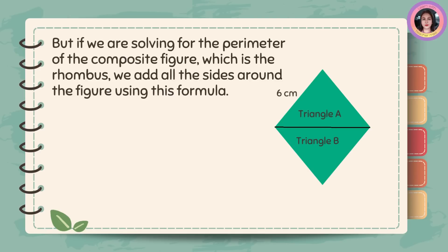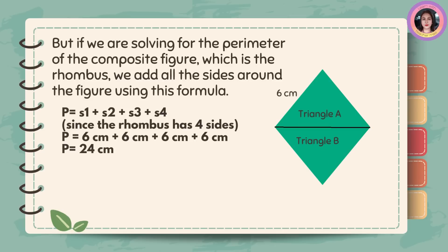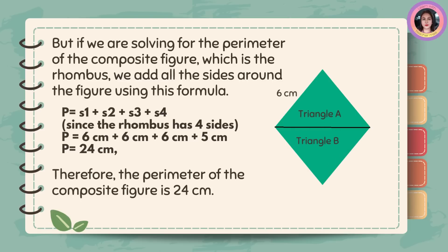But if we are solving for the perimeter of the composite figure, which is the rhombus, we add all the sides around the figure using this formula. Perimeter is equal to S1 + S2 + S3 + S4, since the rhombus has four sides. Perimeter is equal to 6 cm + 6 cm + 6 cm + 6 cm. The sum is 24 centimeters. Therefore, the perimeter of the composite figure is 24 centimeters.